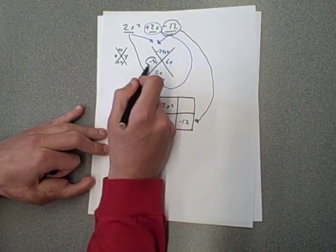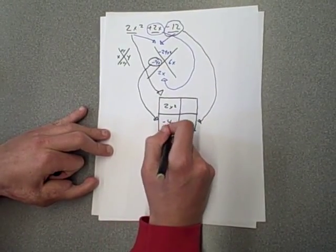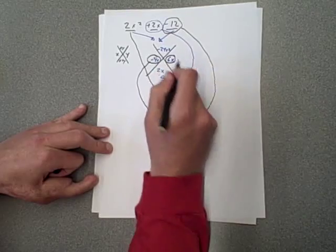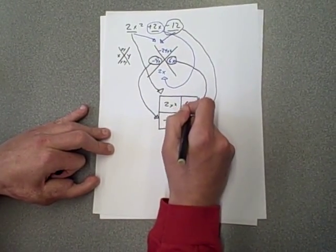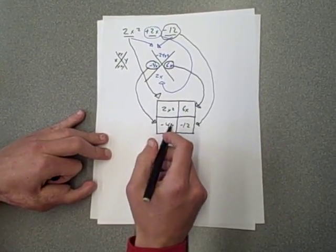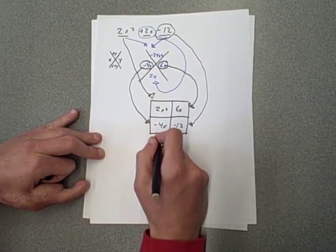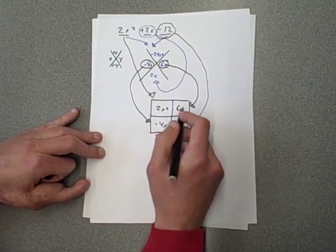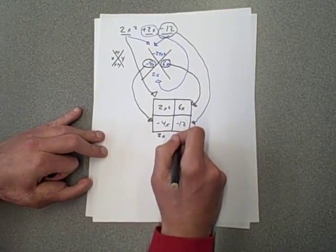And on either side, we're going to put the negative 4x and the 6x. Now we have to find which numbers go into each of these. So we look at 2x squared and negative 4x. What number goes into both of those? Well, 2x does. Into 6x and into negative 12, we find that 6 goes into both of those.